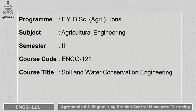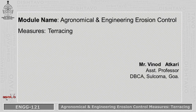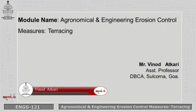Welcome all the students. Today we'll discuss module 6 for the program of first year B.Sc. Agriculture Honours. For the subject Agricultural Engineering, second semester, the course code is Engineering 1-2-1 and the course title is Soil and Water Conservation Engineering. The name of the module is Agronomical and Engineering Erosion Control Measures: Terracing.